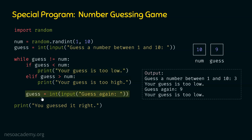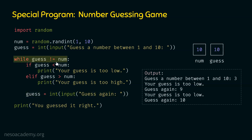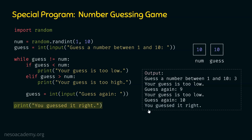We ask 'Guess again' once more, and the user provides 10. At this point guess equals num, so the while loop condition becomes false and the loop terminates. We exit the while loop, and 'You guessed it right' is printed on the screen. The program then terminates. This is the final output: 'You guessed it right.' That is how the program works.